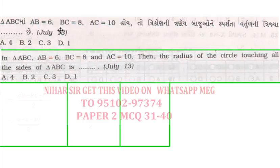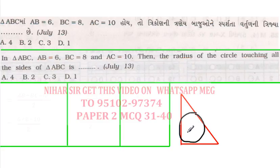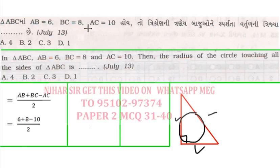Next: in triangle ABC, AB = 6, BC = 8, AC = 10. I recognize this as a Pythagorean triple (6-8-10), so it's a right-angled triangle. The radius of the inscribed circle (touching all three sides) is calculated as: (sum of legs − hypotenuse) / 2 = (6 + 8 − 10) / 2 = 4/2 = 2.